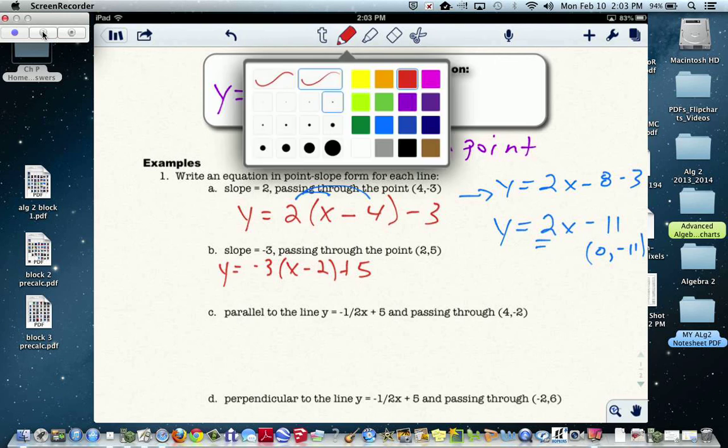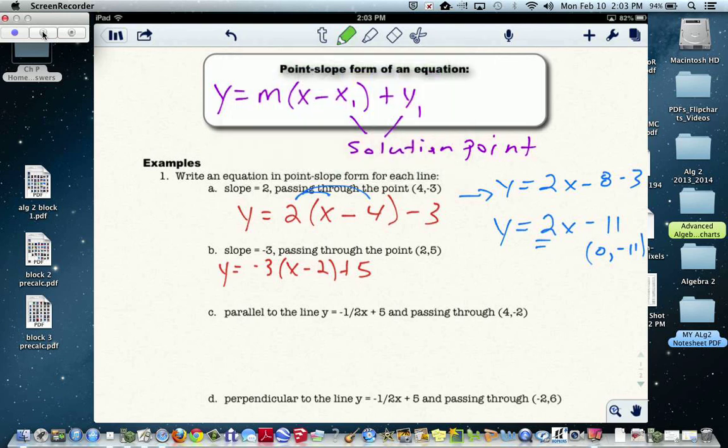And again, I would like to distribute the negative 3 to both of these. So we're going to have y equals -3x plus 6 plus the 5. So my final equation here would be y equals -3x plus 11 again.